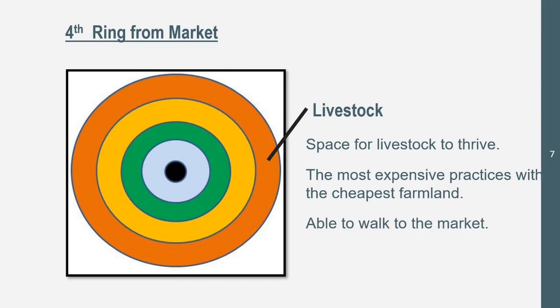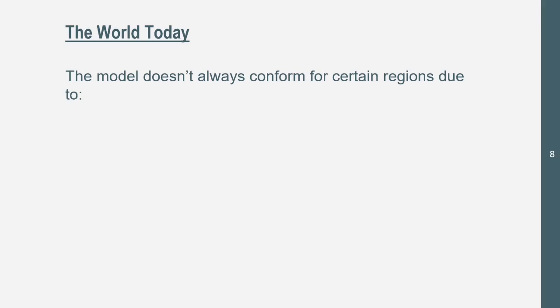It's cheap farmland because it's farther from the market. The thing about this is livestock have legs - they can walk to the market. So they don't really need much transportation. There's not many transportation troubles because they are mobile.